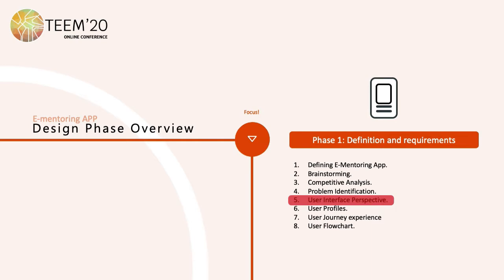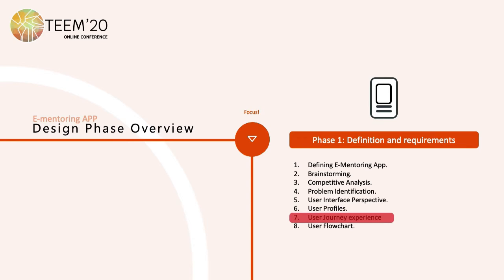The user interface for the e-mentoring app will be accomplished with specific indications. User profiles: two personal profiles were created. They are fictional characters that represent real participants' needs, feelings, and common behavior patterns.